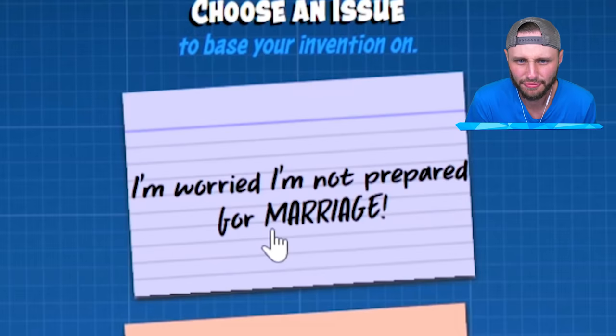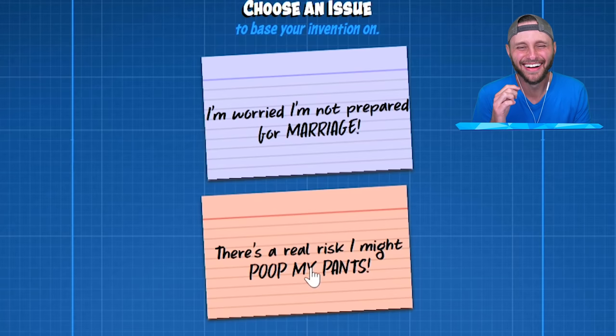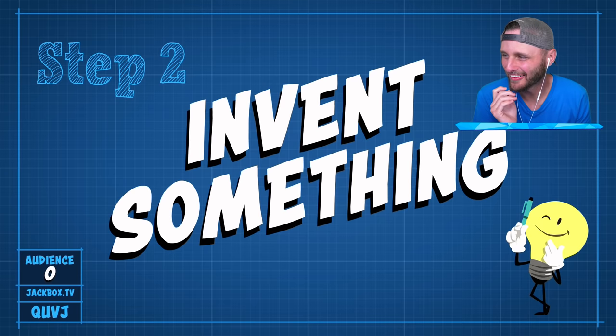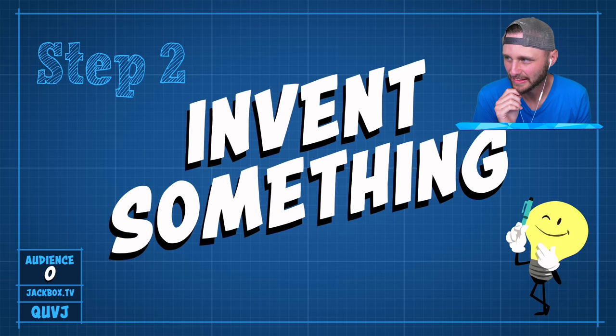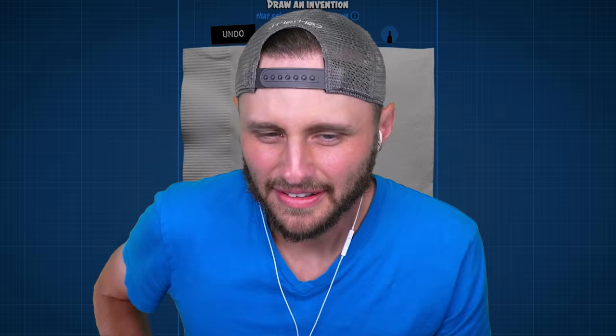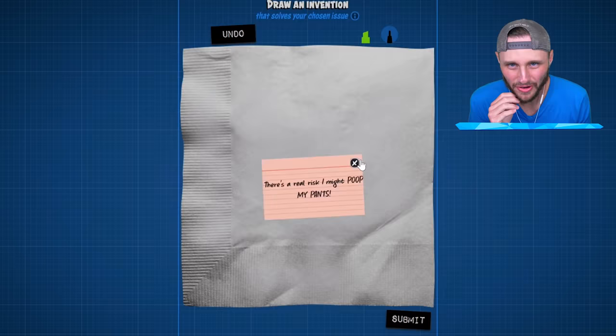I'm worried I'm not prepared for marriage. There's a real risk I might poop my pants. Oh, no. I got a good one. There's a real risk I might poop my pants. This is gonna be terrible. Okay, now we have to invent something. This is when ideas become reality. Using nothing but a pen and paper. But we ran out of paper, so you'll have to use some cocktail napkins. We have to use napkins to draw our invention. Don't forget to spice it up. All right. Draw an invention to solve the problem. There's a real risk I might poop my pants. So I have to draw the invention.